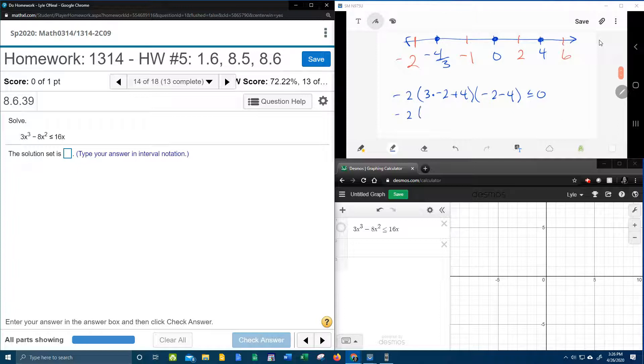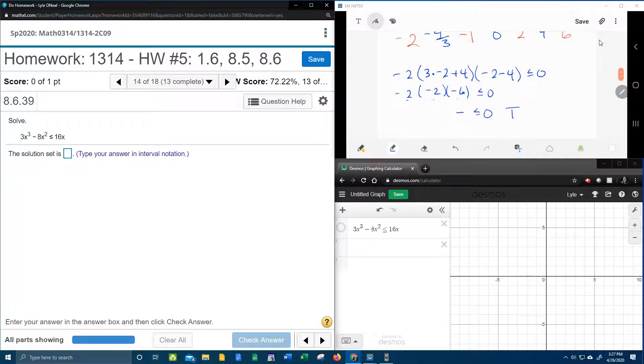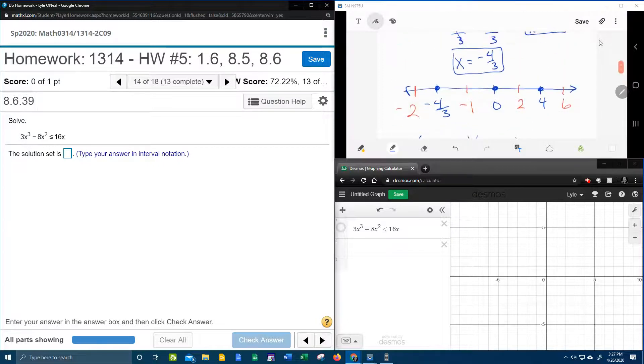And so we need to work that out and see if we get a true or a false. That's going to be negative 2 times. Let's see. That's going to be negative 6 plus 4 is negative 2. Negative 2 minus 4 is negative 6. And then notice what we've got. We've got a negative times a negative times a negative. Overall, that's going to be a negative number, which is less than or equal to 0. Negative numbers are less than or equal to 0. That's true.